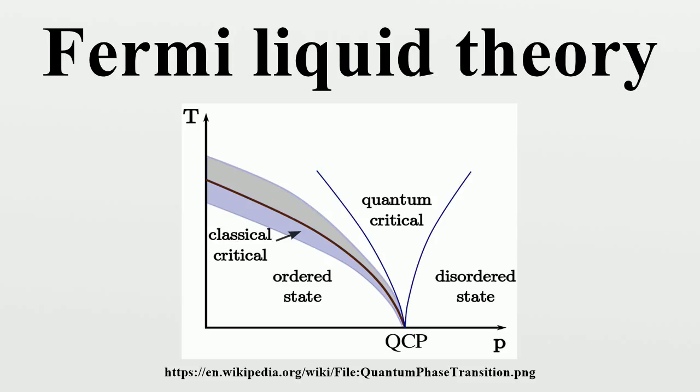For this system, the Green's function can be written in a specific form where μ is the chemical potential and ε is the energy corresponding to the given momentum state. The value Z is called the quasi-particle residue and is very characteristic of Fermi liquid theory. The spectral function for the system can be directly observed via ARPES experiment.